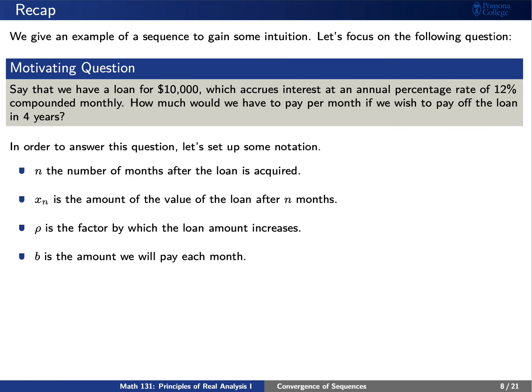To answer this question, we'll need to set up some notation. We'll let n denote the number of months after the loan is acquired, x sub n is the amount of the loan after n months, rho is the factor by which the loan amount increases due to interest, and b will be the amount we'll pay each month.